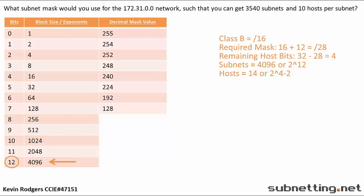The last step is to convert the shorthand mask to decimal. We will start at slash 24 and work our way up: 25, 26, 27, 28. We can see our decimal mask value is 240. Plug that into the fourth octet and we get our answer: 255.255.255.240.